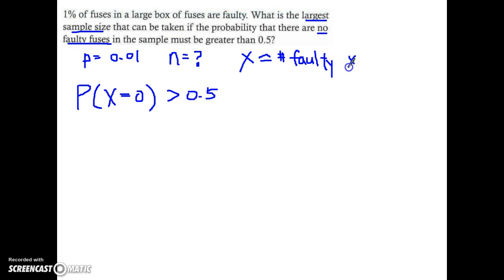So my random variable x is binomially distributed. I don't know what's my n, so keep that as n. And the probability is 0.01.